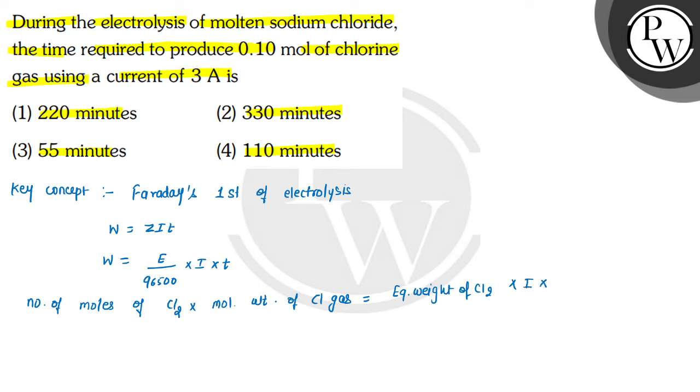I is electricity or current which is given. Multiply by T, that is time, divided by 96500 Faraday.